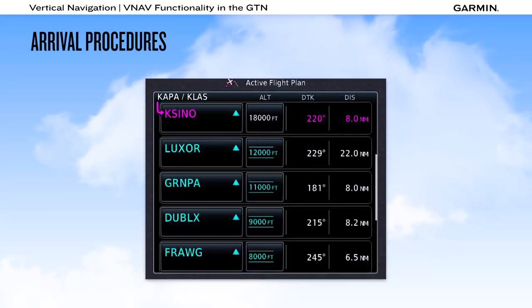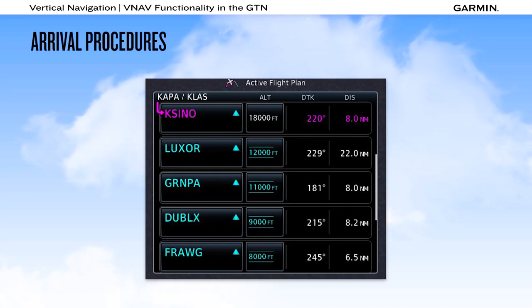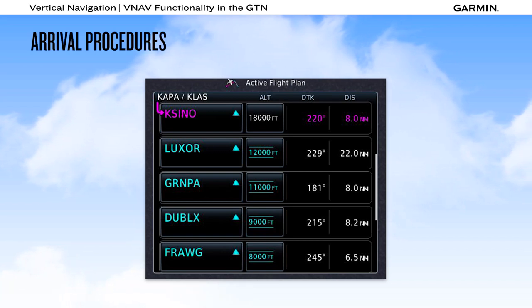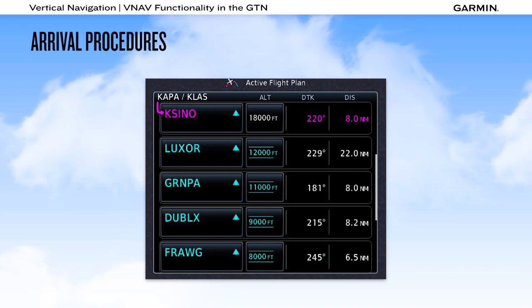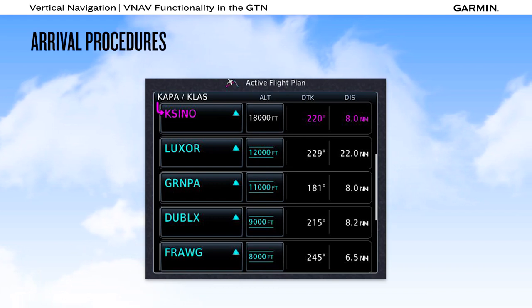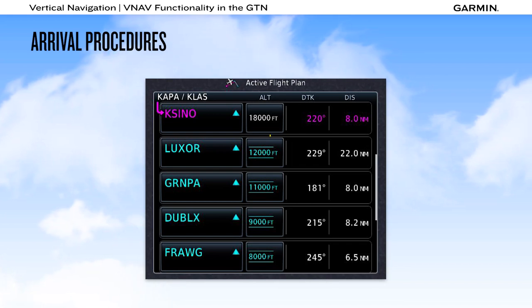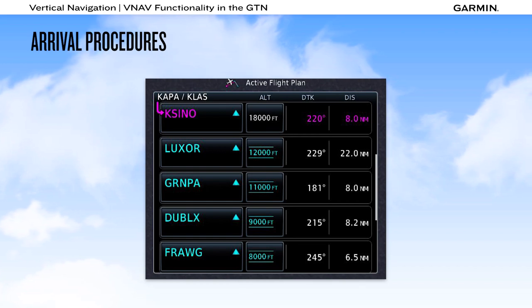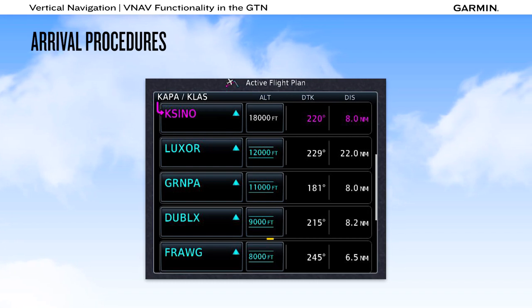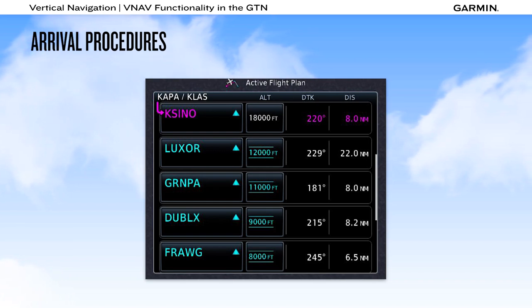On the active flight plan, we can see the arrival procedure with altitudes to the right of each waypoint — some in white and some in cyan. White numbers are advisory only, reflecting the altitude you will be at as part of the vertical path. Cyan depicts designated altitudes for which vertical guidance is available, with the first showing at 12,000 feet at Luxor, just as depicted on the chart. The remainder of the constraints match the chart. The lowest altitude in the procedure — 8,000 feet at Frog — is the altitude you set into the selected altitude field when cleared to descend via the arrival.